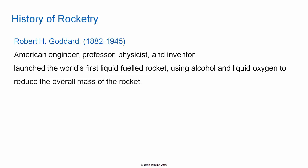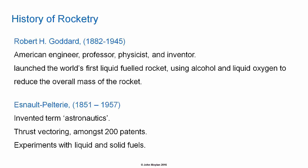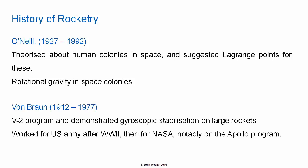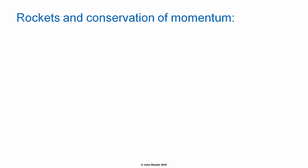Robert H. Goddard was an American engineer, professor, physicist, and inventor who launched the world's first liquid-fueled rocket using alcohol and liquid oxygen to reduce the overall mass of the rocket. Esnault-Pelterie invented the term astronautics and, among 200 patents during his lifetime, held patents for thrust vectoring and carried out experiments with liquid and solid fueled rockets. O'Neill theorized about human colonies in space, suggested Lagrange points for these, and proposed the use of rotational gravity in space colonies. Von Braun was in charge of the V-2 program during World War II for the Germans and demonstrated gyroscopic stabilization on large rockets, before working for the US Army and then NASA, notably on the Apollo program.